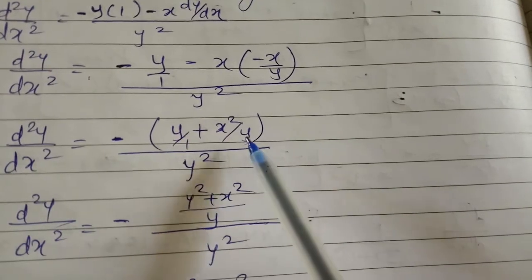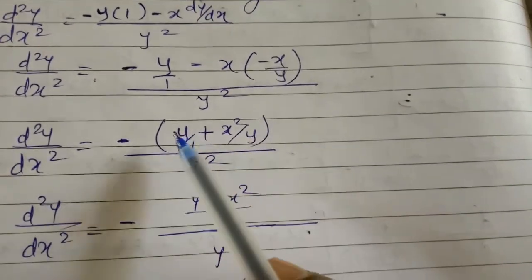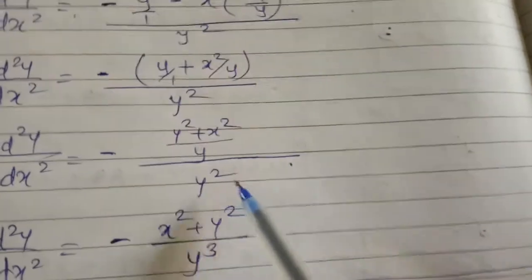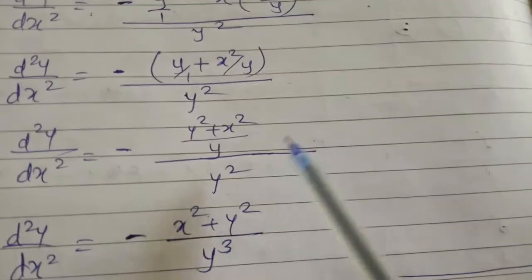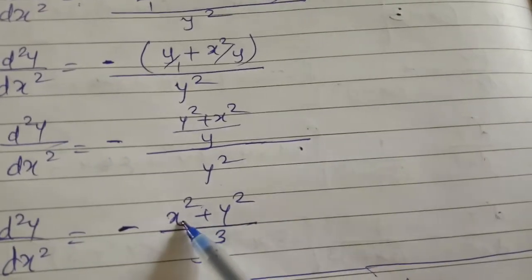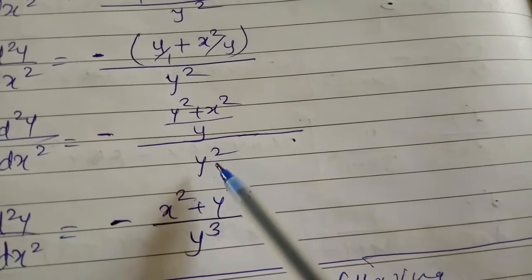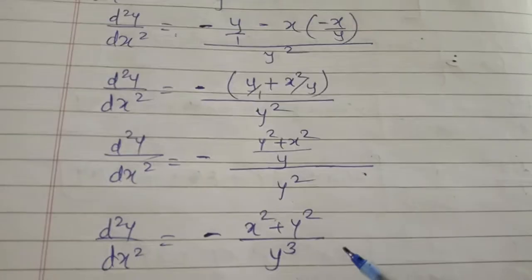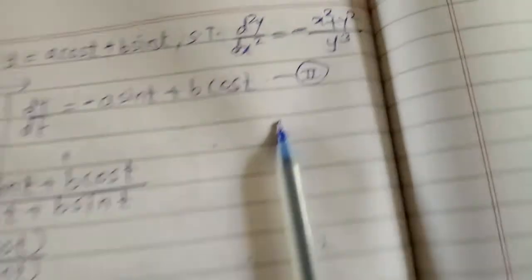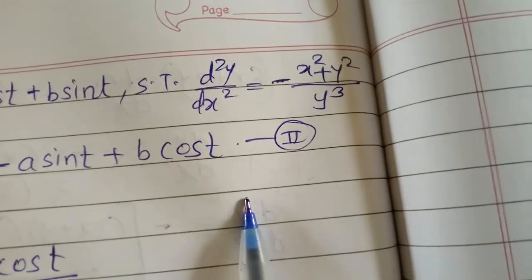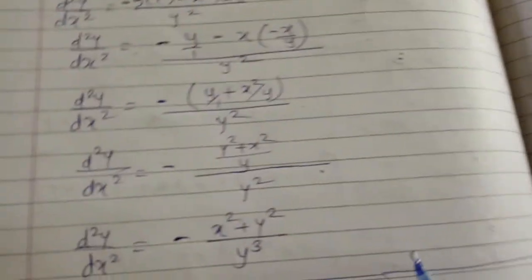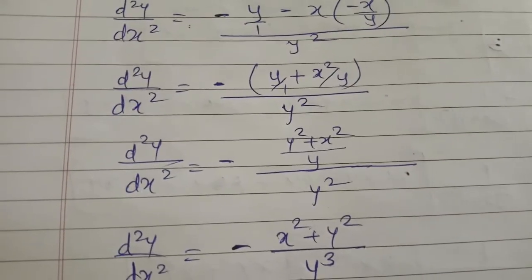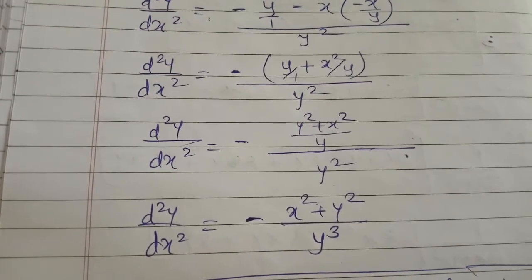Simplifying: d²y/dx² = -[y + x²/y] / y² = -[(y² + x²)/y] / y² = -(x² + y²)/y³. This is the required result. This completes all of question number 3, and question number 4 will be covered in the next lecture.